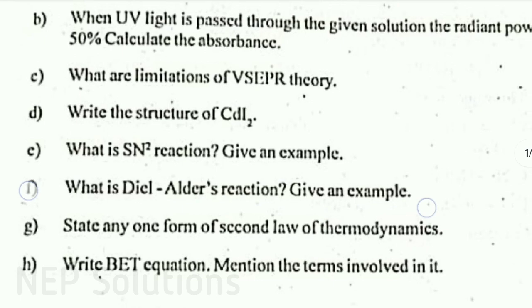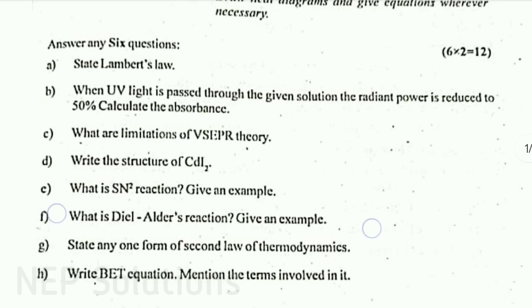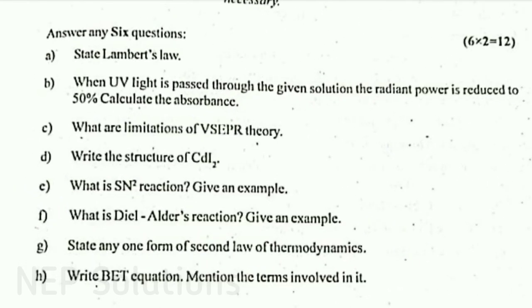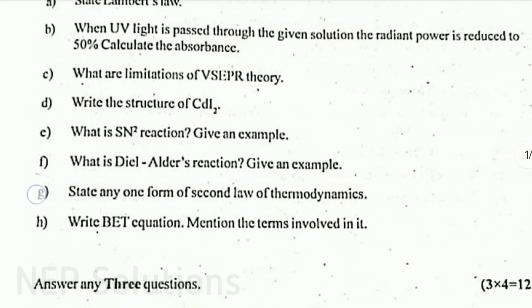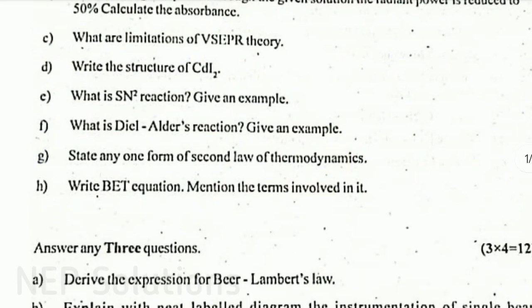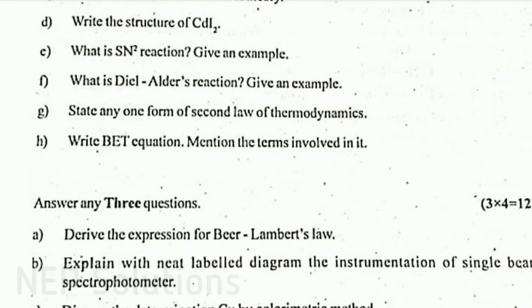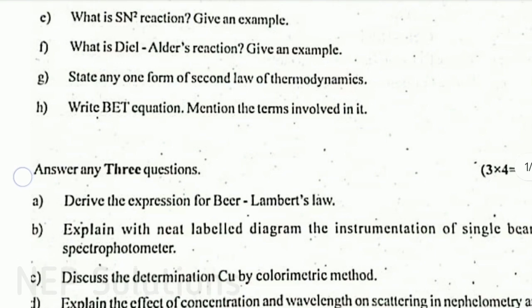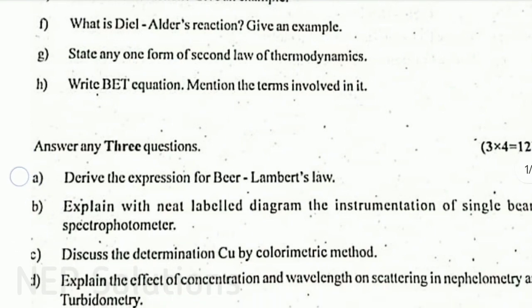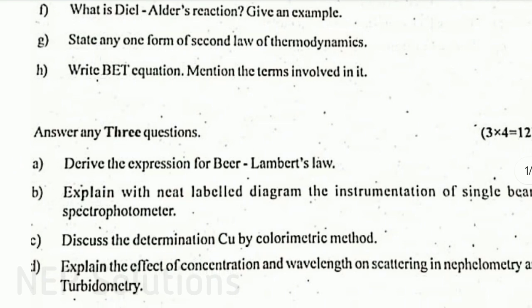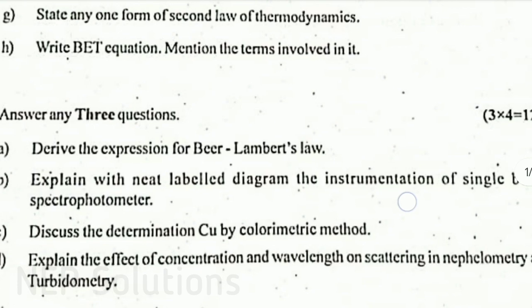Next, 4-mark questions — 4 questions given, answer any 3. A. Derive the expression for Beer-Lambert's Law. B. Explain with a neat labeled diagram the instrumentation of a single beam spectrophotometer. C. Discuss the determination of Q by colorimetric method. D. Explain the effect of concentration and wavelength on scattering in nephilometry and turbidometry.